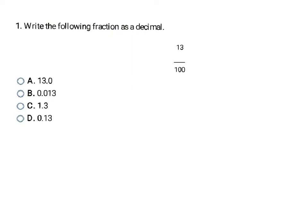So this first problem, we are converting the following fraction to a decimal, and they've already made the denominator 100. That means I'm going to have a decimal where the last number is in the hundredths place, so it's going to have two decimal place numbers. I'm just going to fill in the 1 and the 3 with no extra zeros, and that makes D my answer.